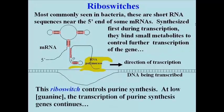In this example, the mRNA shown is in the pathway for purine biosynthesis. If cellular concentrations of guanine, a purine base, are low, the gene is actively transcribed.